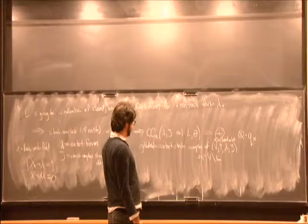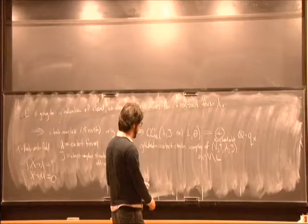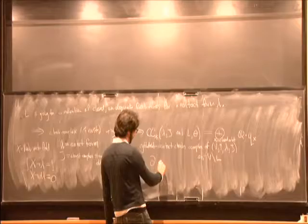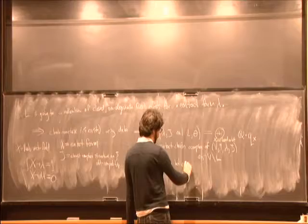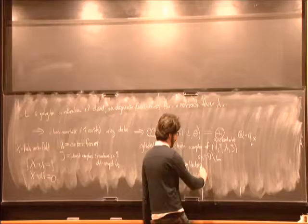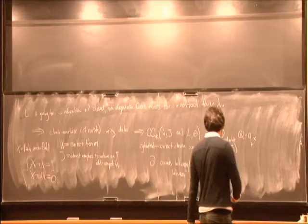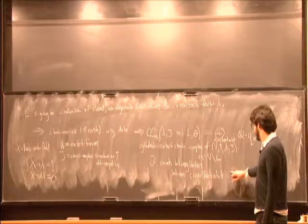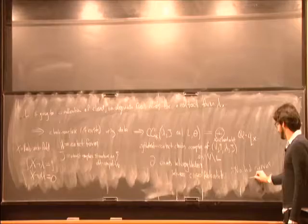The chain complex has a differential which counts holomorphic curves — actually holomorphic cylinders — between closed Reeb orbits. One key property is: if there are no holomorphic curves, then d = 0. So no holomorphic curves implies the differential is 0.